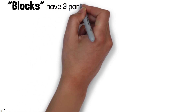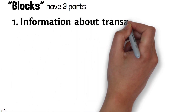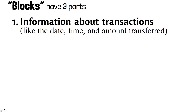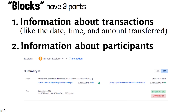Blocks on a blockchain are made up of digital pieces of information, and specifically they have three parts. First, they store information about transactions, like the date, time, and amount transferred. Second, they store information about who is participating in transactions. For example, it will contain information for your purchase from Amazon, with your name along with Amazon.com. But instead of using your actual names, your purchase is recorded without any identifying information.